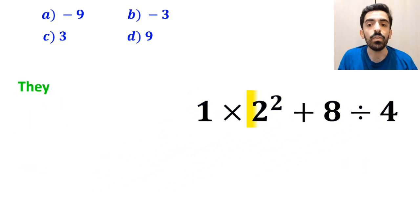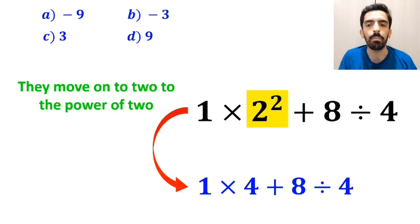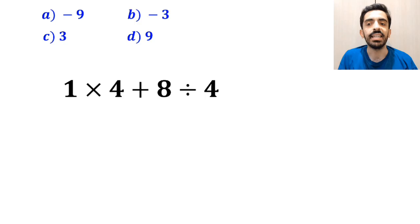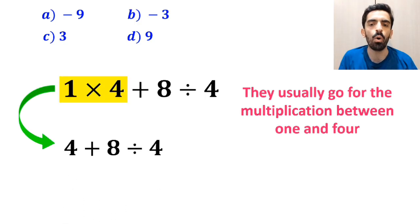Then they move on to 2 to the power of 2, which I have highlighted in yellow, and replace this expression with 1 times 4 plus 8 divided by 4. In the next step, they usually go for the multiplication between 1 and 4 and replace this expression with 4 plus 8 divided by 4.